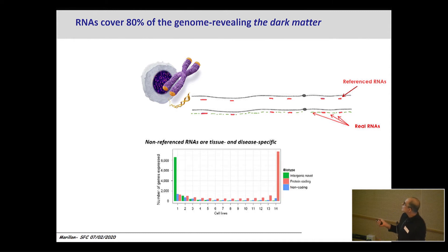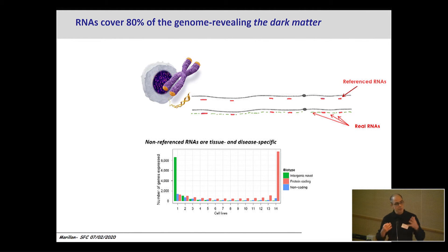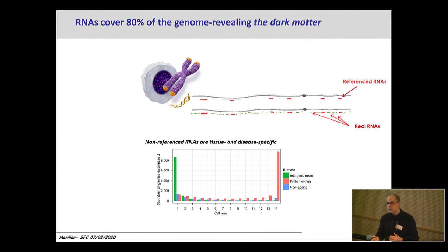One specificity of these reference lncRNAs is shown in this early result from the ENCODE project in 2012, where the expression of messenger RNA compared to lncRNA was plotted across 14 human cell lines. Messenger RNAs are more or less expressed at the same level in all cell lines. If you take the lncRNAs, it's the exact opposite — the majority are expressed in only one cell line each, giving an idea of cellular specificity and suggesting they could play a role in cellular identity.